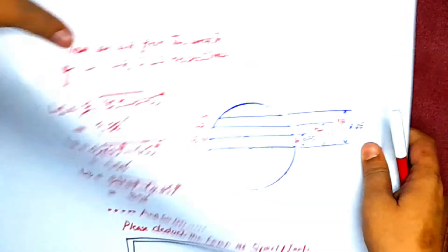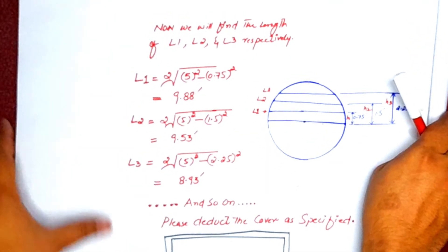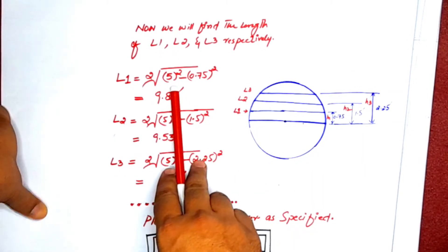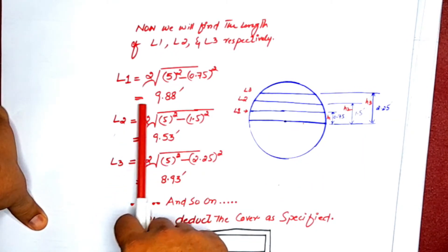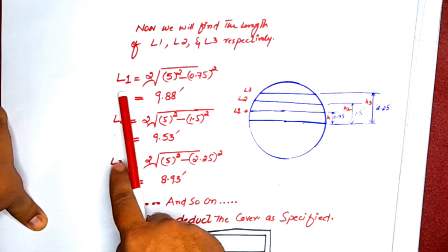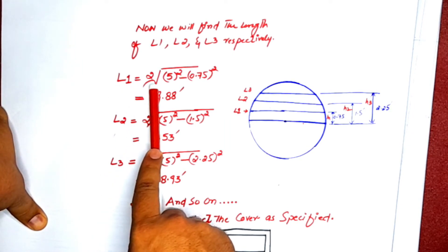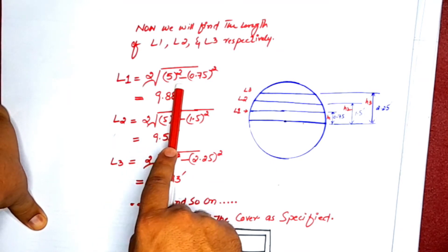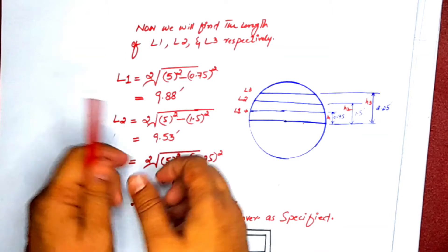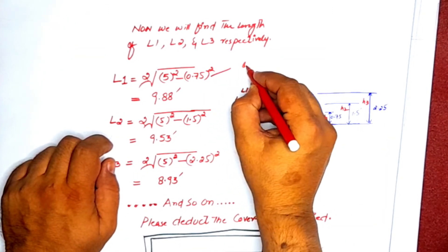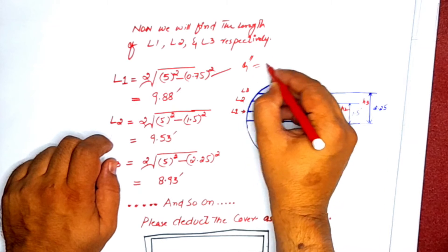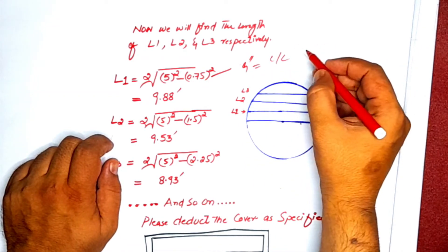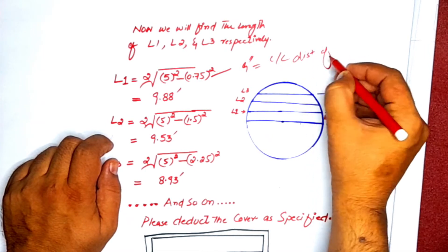We will now calculate the lengths L1, L2, L3, and so on. Using our derived formula, L1 = 2 × √(5² − 0.75²), where 0.75 feet is the nine-inch center-to-center distance between two bars.